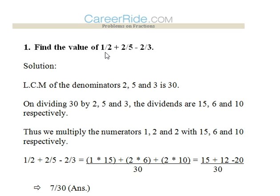So firstly we have to find the value of 1/2 + 2/5 - 2/3. Now what we have to do is find the LCM of 2, 5 and 3, that is 30. We'll write down 30 as the denominator then divide 30 by 2, then by 5 and then by 3. We get the dividends 15, 6 and 10.